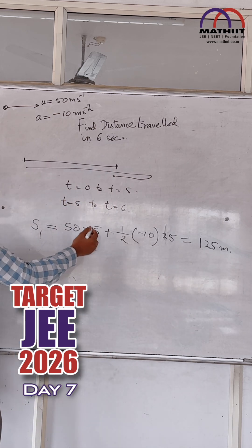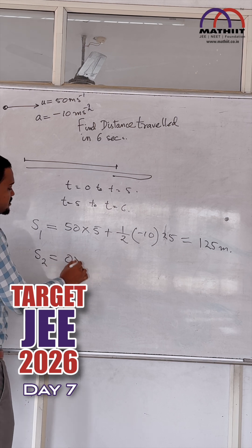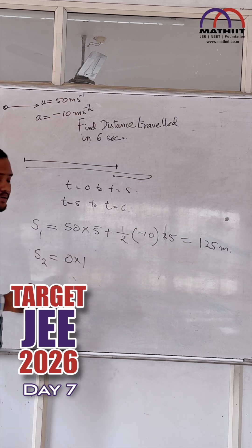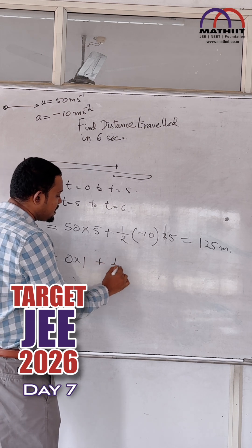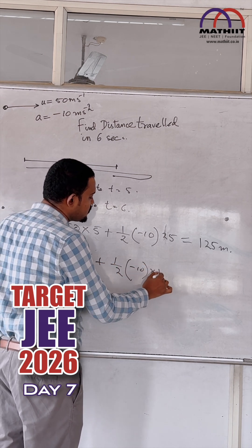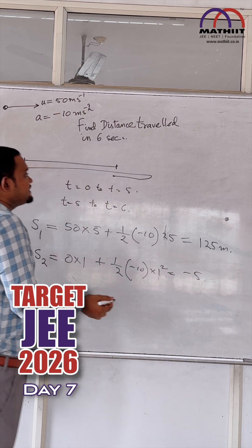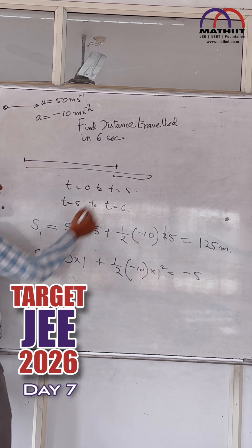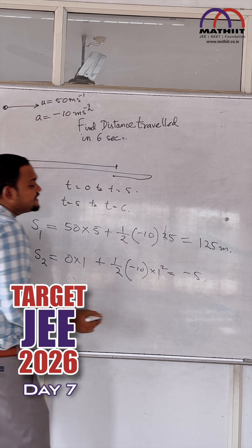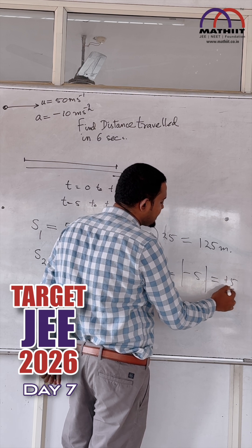For the second part, from t equal to 5 to t equal to 6, s2 equals 0 into 1, because the initial velocity is now 0, plus half into minus 10 into 1 squared, which gives minus 5. But this is displacement. The displacement is minus 5, but the distance traveled is the magnitude of that, which is plus 5.